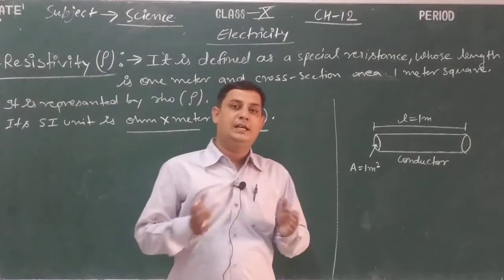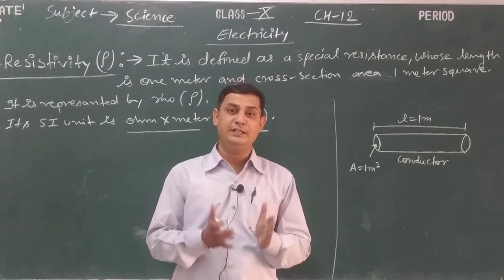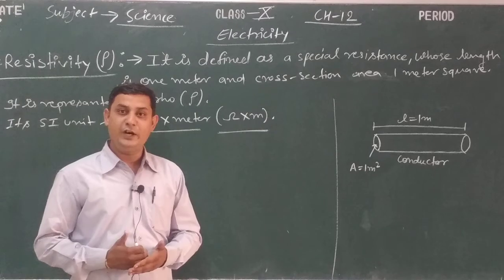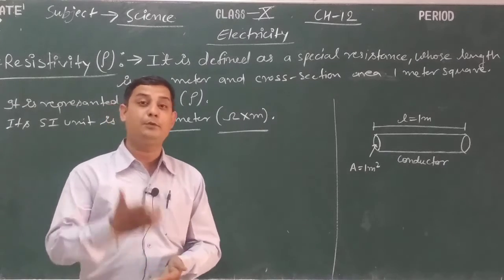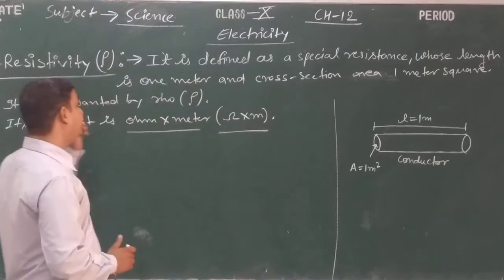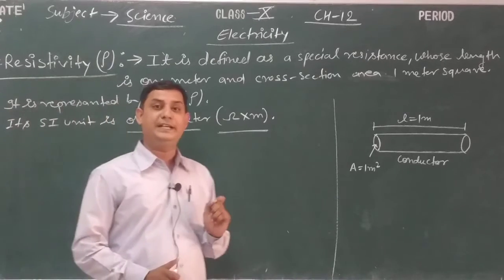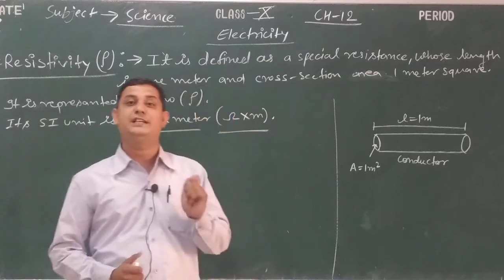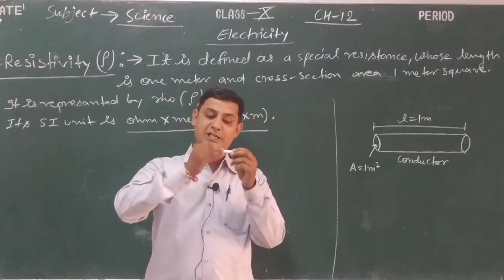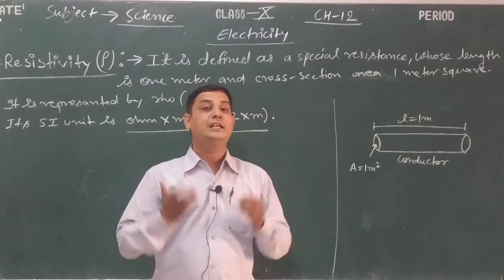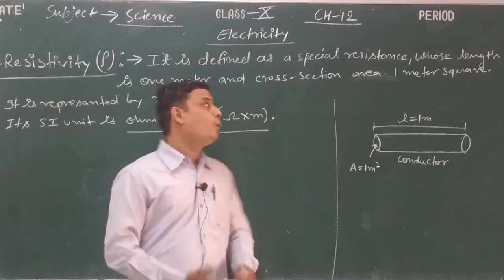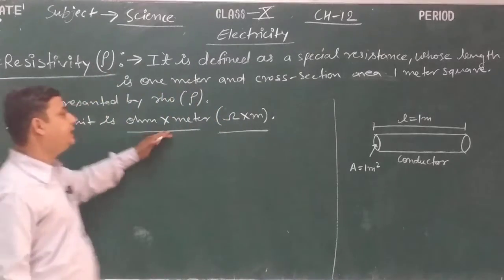Now, what is the difference between resistance and resistivity? Resistance is the property of a substance or conductor which opposes the flow of current in the circuit. Resistivity is also a property, but it is a special case — that is why its name is specific resistance. It applies to a resistor whose length is 1 meter and cross-section area is 1 meter square, and is denoted by rho with SI unit ohm·meter.